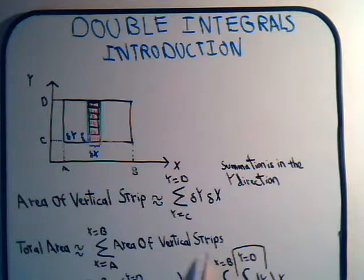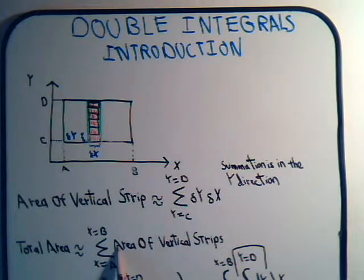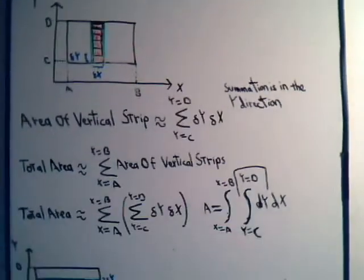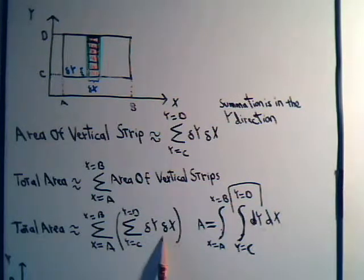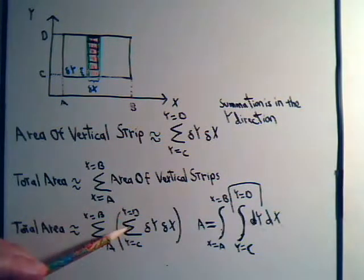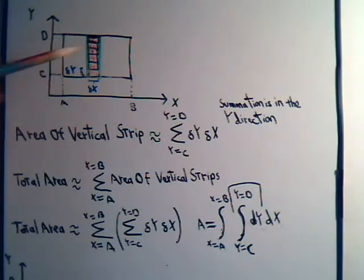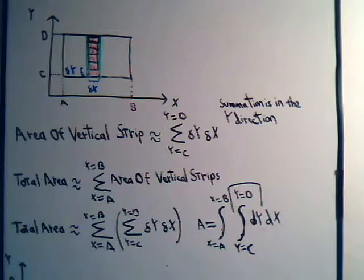The area of any one vertical strip is the inner summation, so we can substitute that in. The total area is really this double summation: delta y times delta x is the area of a shaded region. We add up all those regions from y equals c to y equals d to get a vertical strip, then add all the vertical strips from x equals a to x equals b to get the approximate total area.